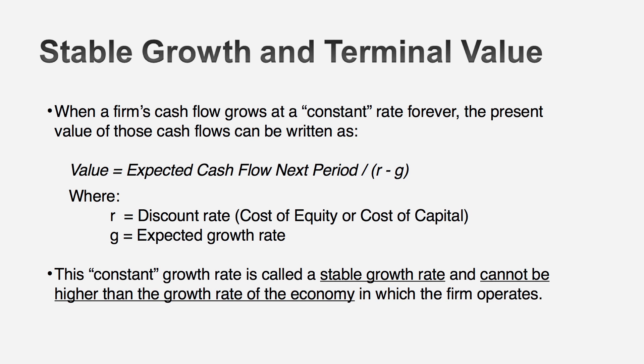Your choices are liquidation value or going concern value. The standard approach to estimating terminal value is the going concern approach, where you assume your cash flows grow at a constant rate forever. That's a very convenient way to estimate terminal value, but it can also get you into trouble — the number that usually gets valuations in trouble is the terminal value number. So I'm going to introduce four very simple rules to keep your terminal value in check and keep it from running away with your valuation.